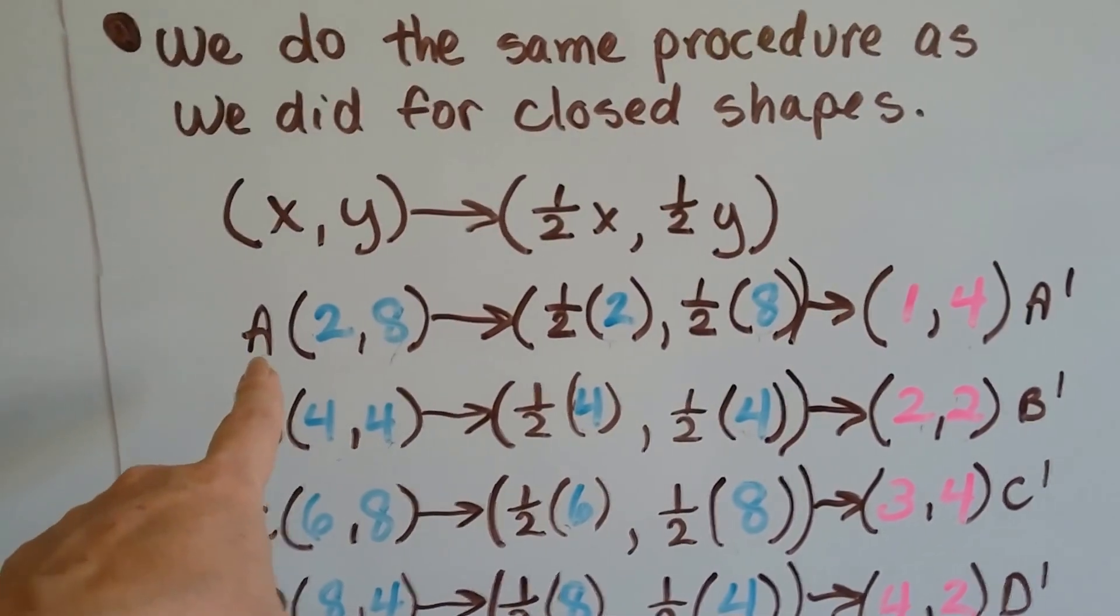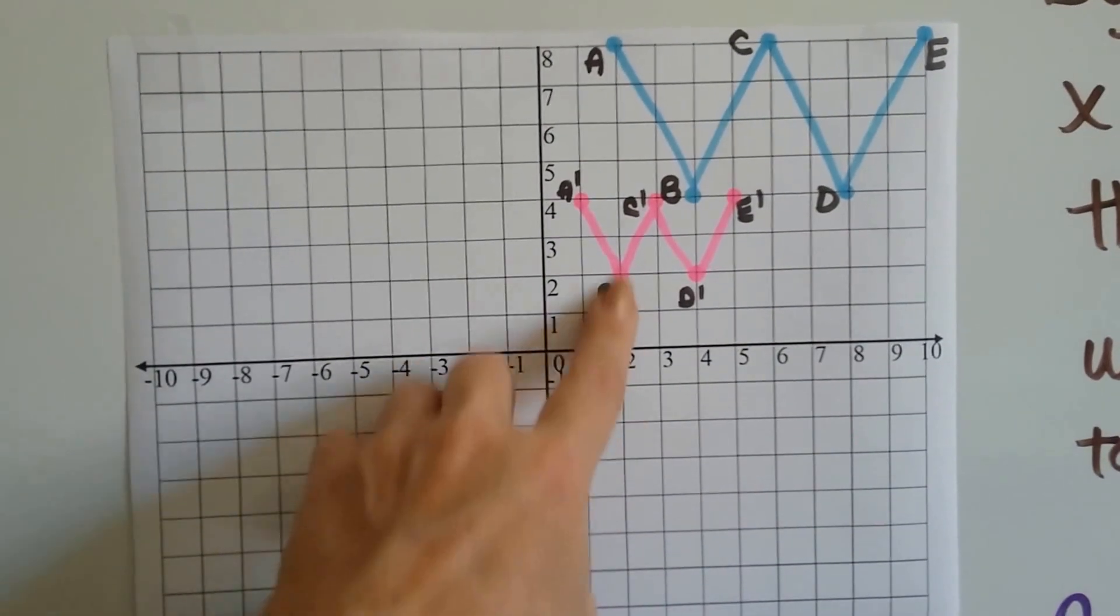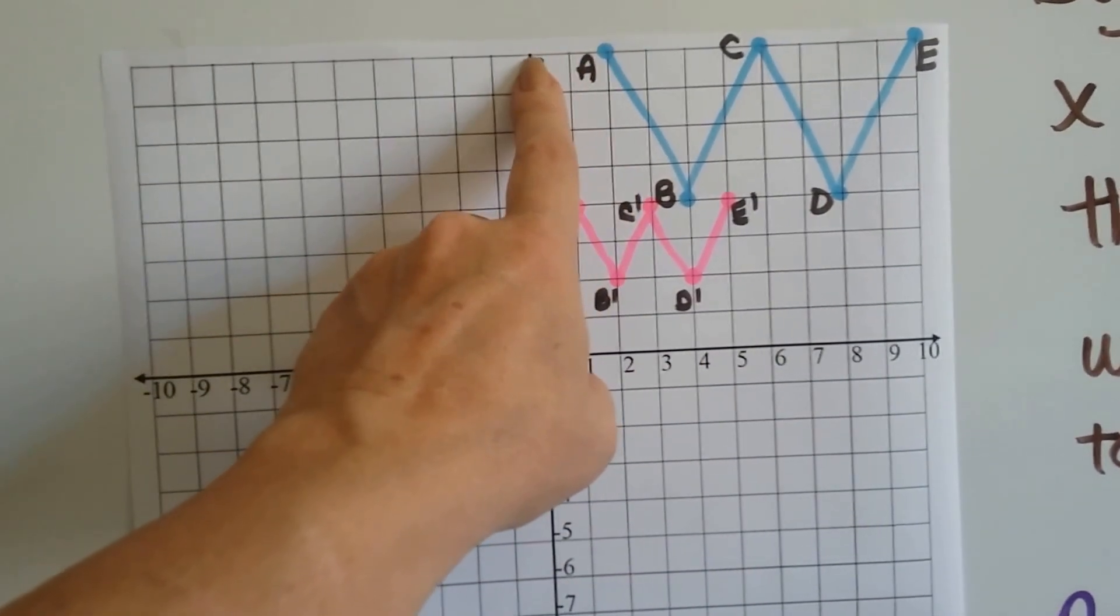So, if A for the blue W is at (2,8), let's look - A is at 2 for x and 8 for y.